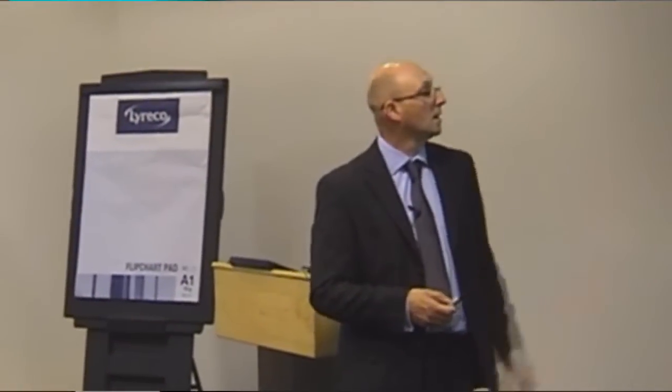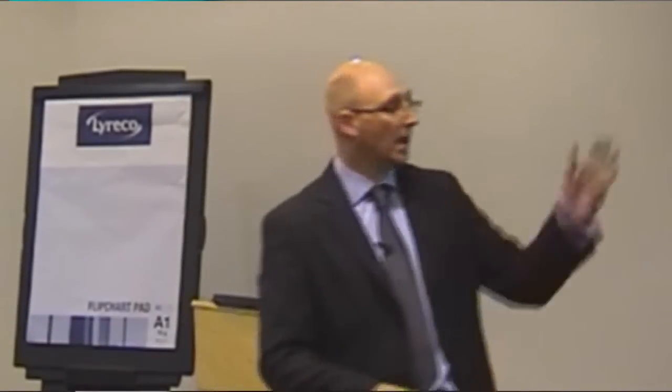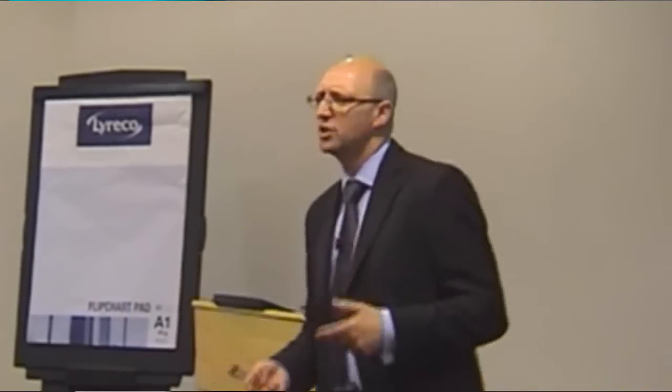I would suggest you guarantee the amount of compute resources available and allow them to use that. When you actually measure it — across a 24-hour period, seven days a week — less than 20% is still the average utilization in investment banks. I've heard CIOs stand up at conferences and admit: 'Our utilization is less than 20% across the whole estate.' There have been many initiatives to address this, including virtualization and grid, which was supposed to be the panacea.